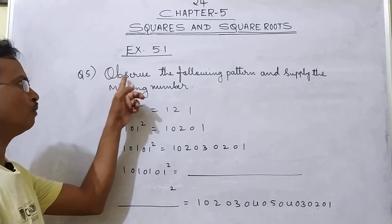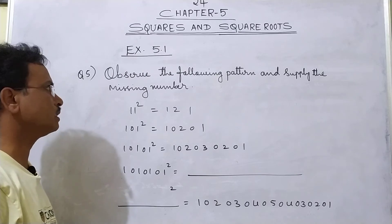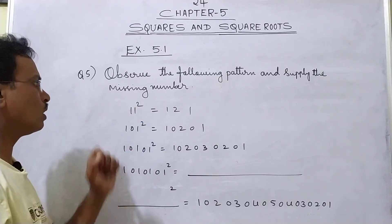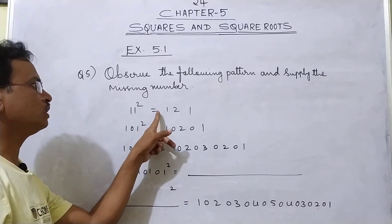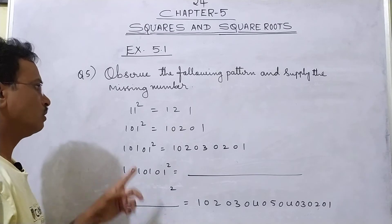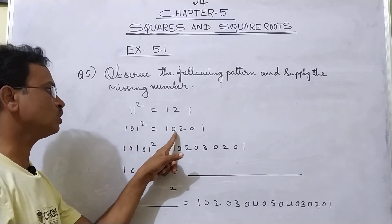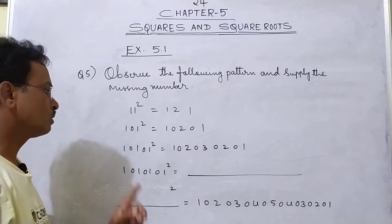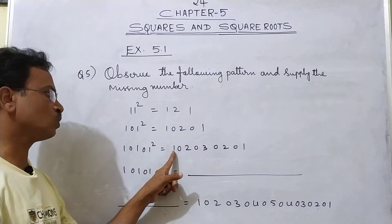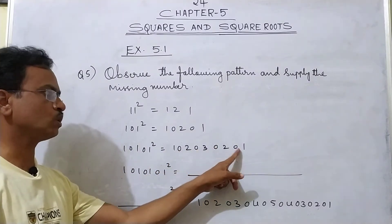Question No. 5: Observe the following pattern and supply the missing number. 11 squared is equal to 121. Then 101 squared is equal to 10201. Then 10101 squared is equal to 102030201.